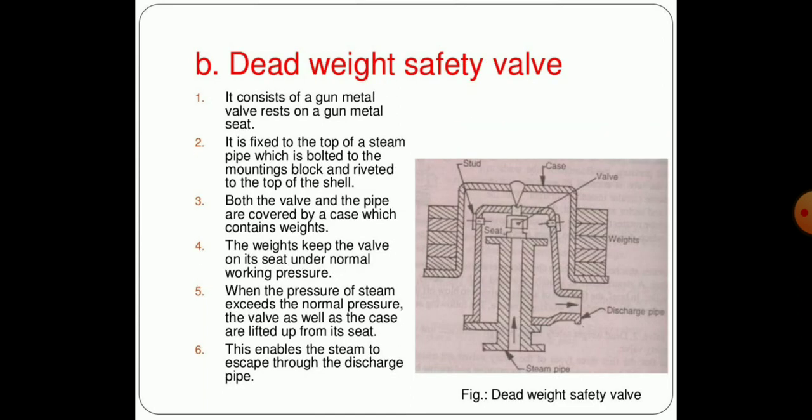The second type of safety valve is the dead weight safety valve. It consists of a gun metal valve that rests on a gun metal seat. It is fixed to the top of the steam pipe which is bolted to the mounting block and riveted to the top of the shell.